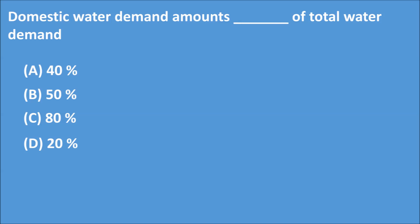Q3: Domestic water demand amounts to what percentage of total water demand? Option A) 40%, Option B) 50%, Option C) 80%, Option D) 20%. The correct answer is Option B: 50%. Domestic water demand amounts to 50% of total water demand.